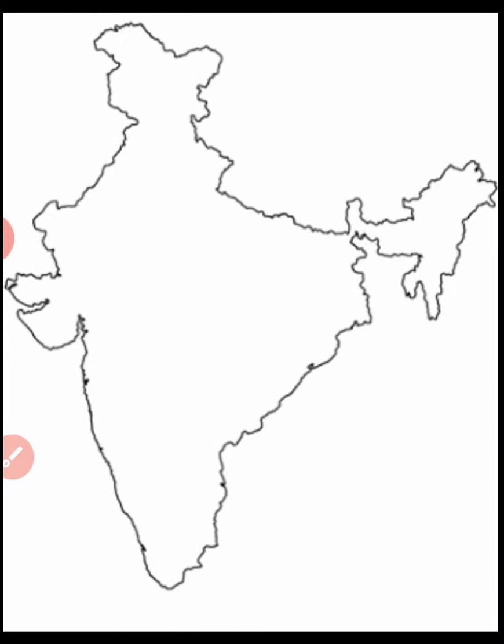Here you can see the blank map of India. On this map we will study which river is where and where it starts. So there are some major rivers in our class — like Indus, Ganga, Brahmaputra, then we have tributaries of Ganga. And as we have South India in our country, we will study those as well.